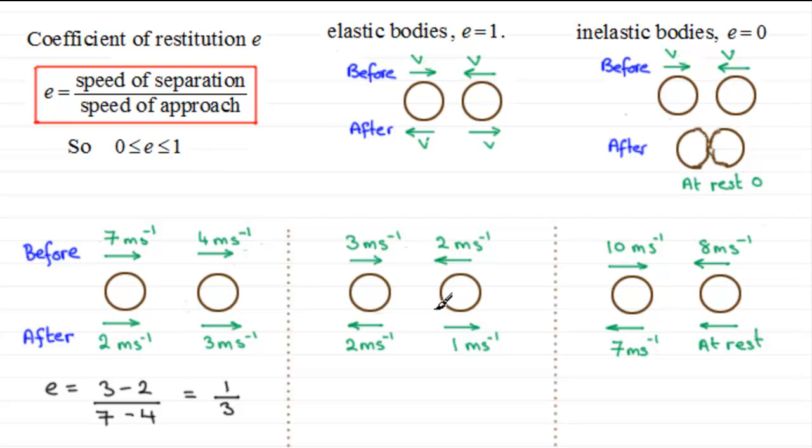Now in the next diagram I've changed the velocities. So for this type of situation, the coefficient of restitution e will be, again we look at the speed of separation. Now they're moving in opposite directions this time to one another, so therefore the speed of separation, that relative speed, is going to be 2 plus 1, a total of 3 meters per second.